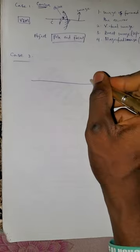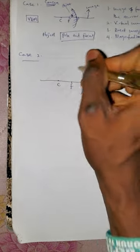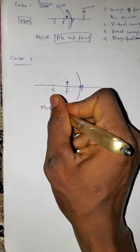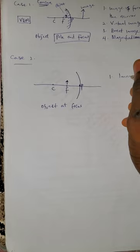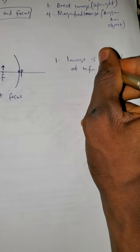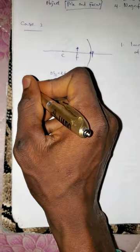Case two: the object is placed at the principal focus. The image is formed at infinity. This is the only thing that happens — whenever the object is placed at the principal focus, the image formed is at infinity.